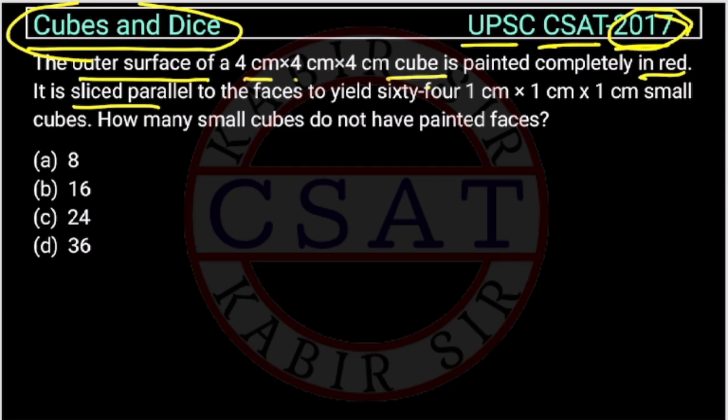It is sliced parallel to the face to yield 64, 1 centimeter by 1 centimeter by 1 centimeter small cubes. How many small cubes do not have painted faces? So, we have to find cubes which are not painted from any side.